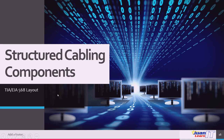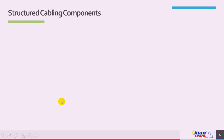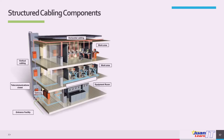Next are the structured cabling components. The TIA EIA 568 layout is illustrated on a diagram showing several areas: entrance facility, telecommunication closet, vertical cabling, equipment room, work area, and horizontal cabling. The hierarchical structure is apparent in a multi-floor office building. Vertical cabling runs from the central hub or switch in the main equipment room to the hub or switch in the telecommunication closet on each floor.